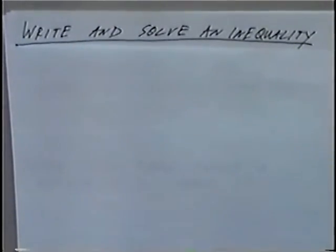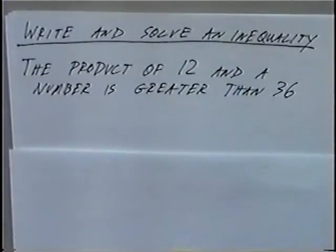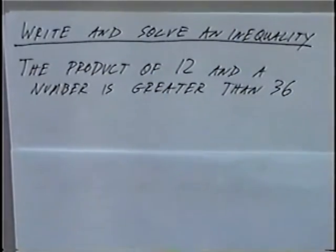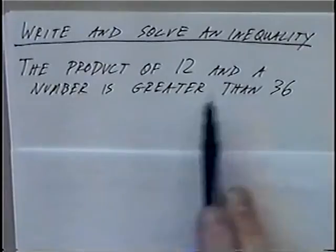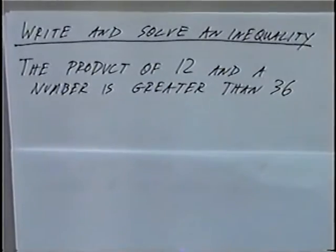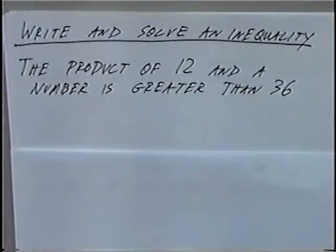The title of the last section today is Write and Solve an Inequality. The first problem: the product of 12 and a number is greater than 36. The word 'product' means to multiply. A number we don't know can be represented by the variable x. 'Is greater than' gives us the inequality symbol, followed by 36.